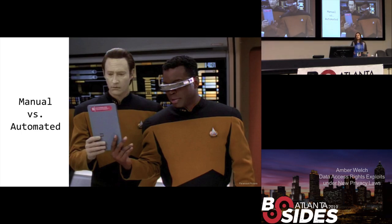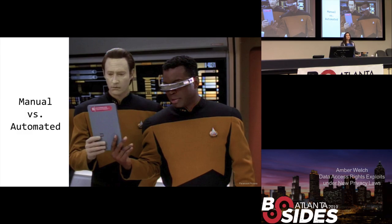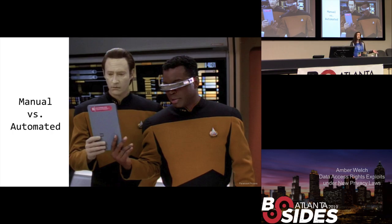With data subject access requests, there are a couple of ways to honor these requests. You can give an automated way for data subjects to go into an account and submit completely without any human intervention other than setting up the process in the first place. Or on the other end, you can go completely manual — provide a form for someone to fill out their information and manually process that request. There are also hybrid approaches where people click a button in their account and generate a few pieces of information, and then someone like a DBA will complete the request. Companies decide which approach based on the cost to implement an automated solution versus how much volume they expect or the complexity of the data.